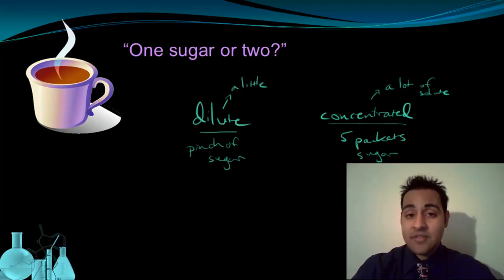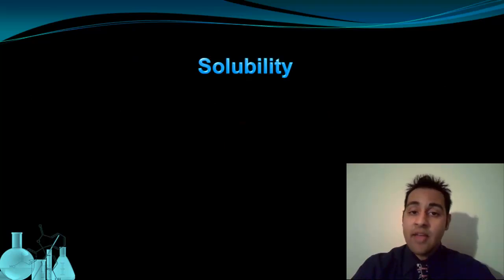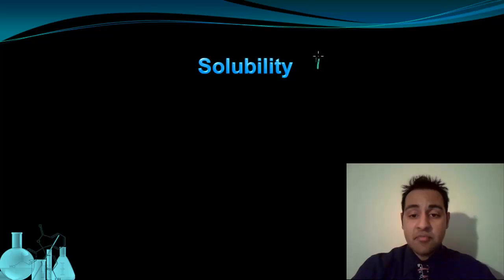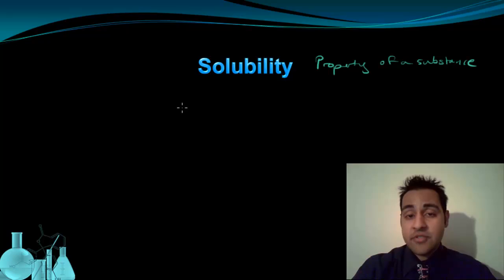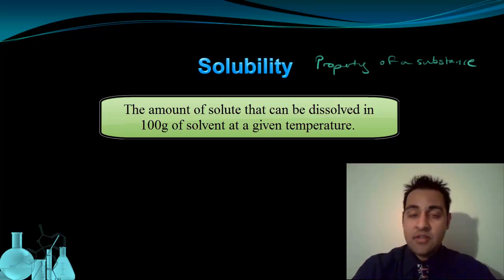And that's okay for some situations, but there is a more precise way of describing the amount of solute, and we call that solubility. Solubility is a property of a substance, and it refers to the amount of solute that can be dissolved in a fixed quantity — typically 100 grams — of solvent at a given temperature.